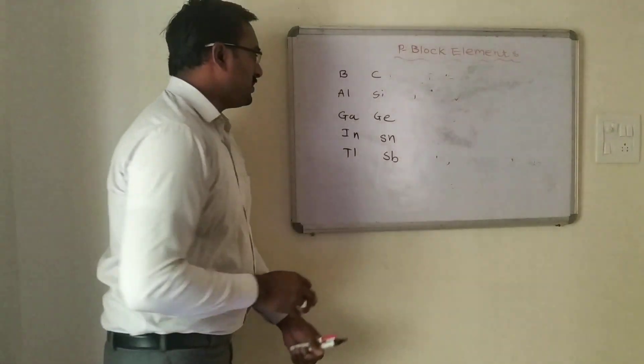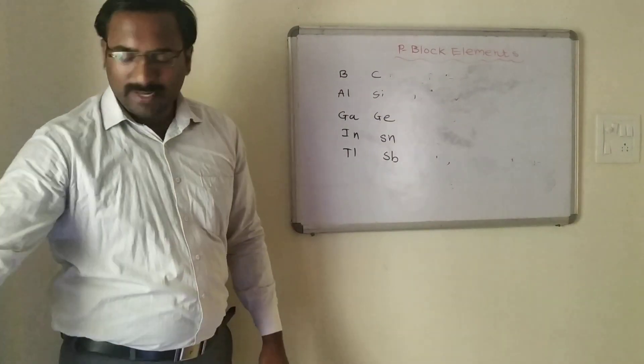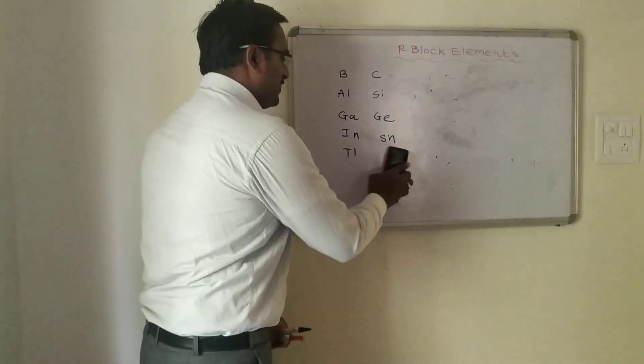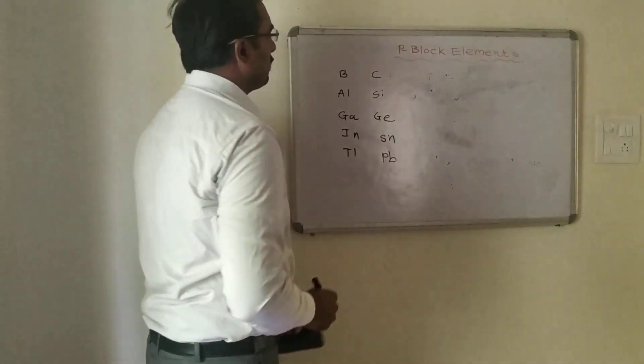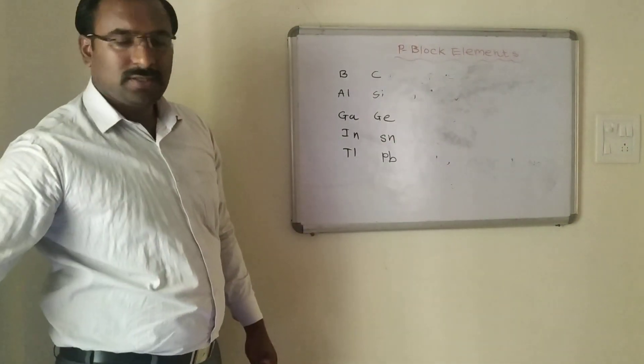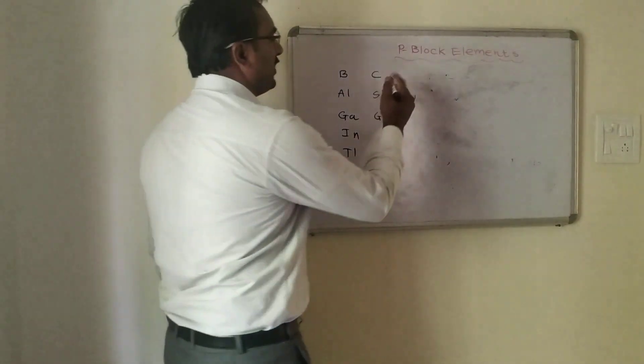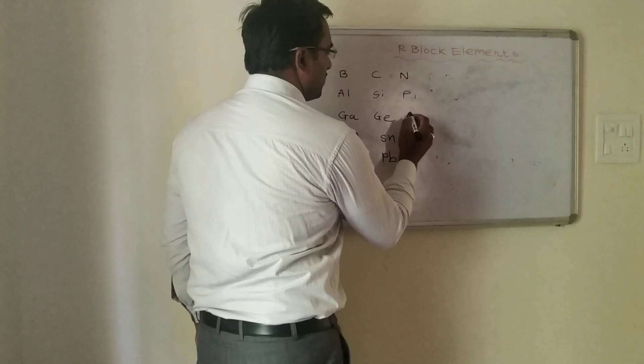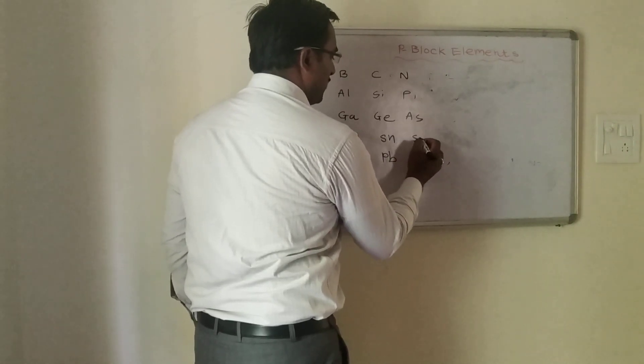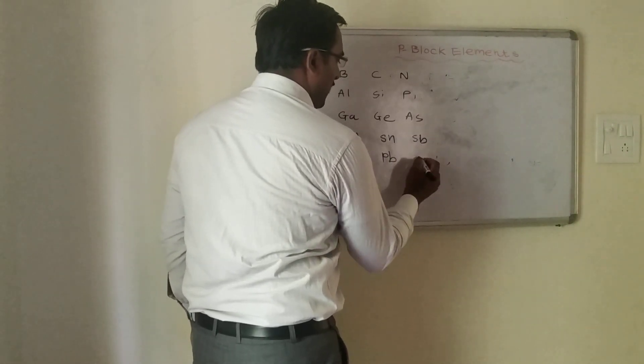Group 15 is the nitrogen family containing nitrogen, phosphorus, arsenic, antimony, and bismuth.